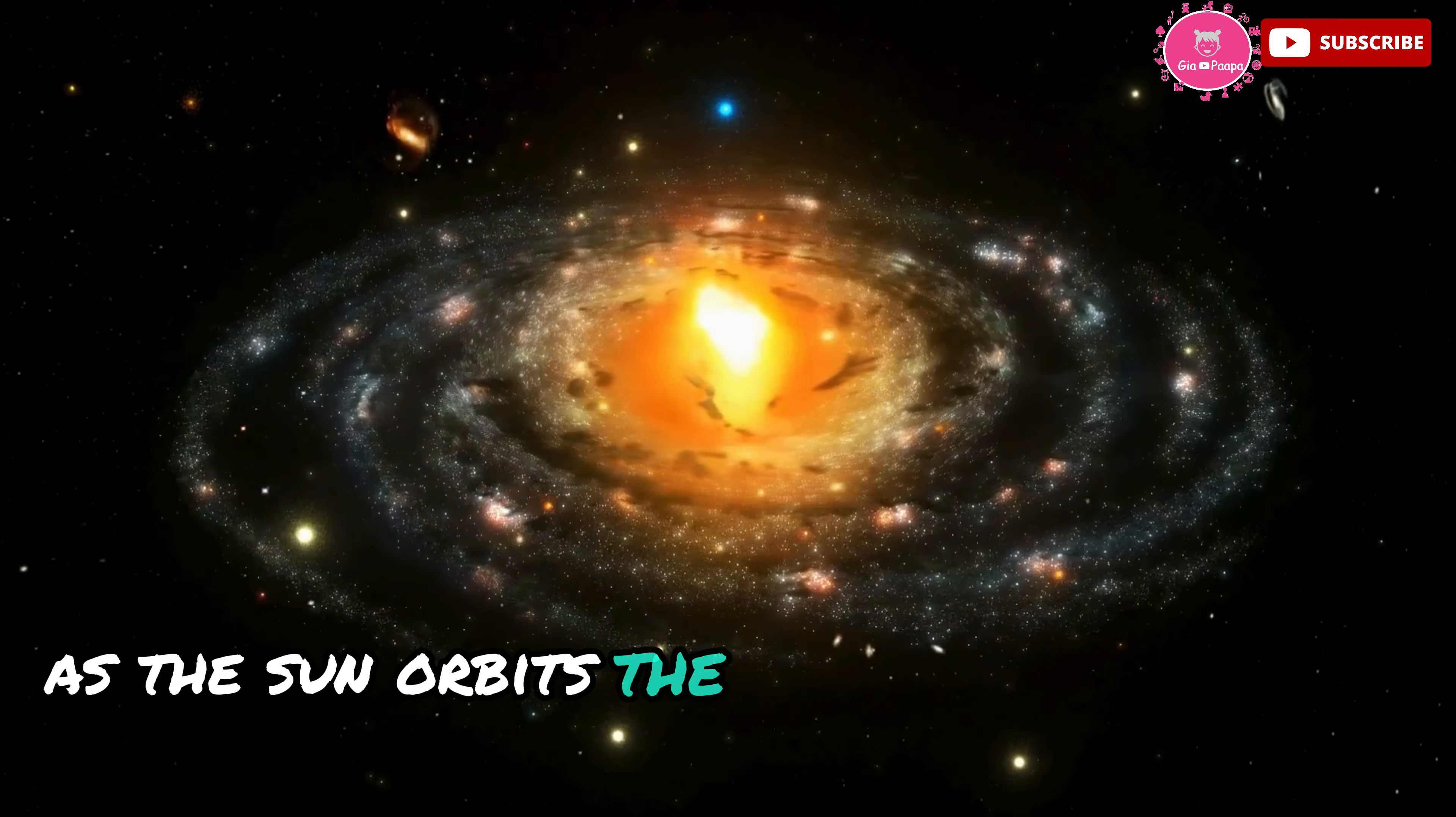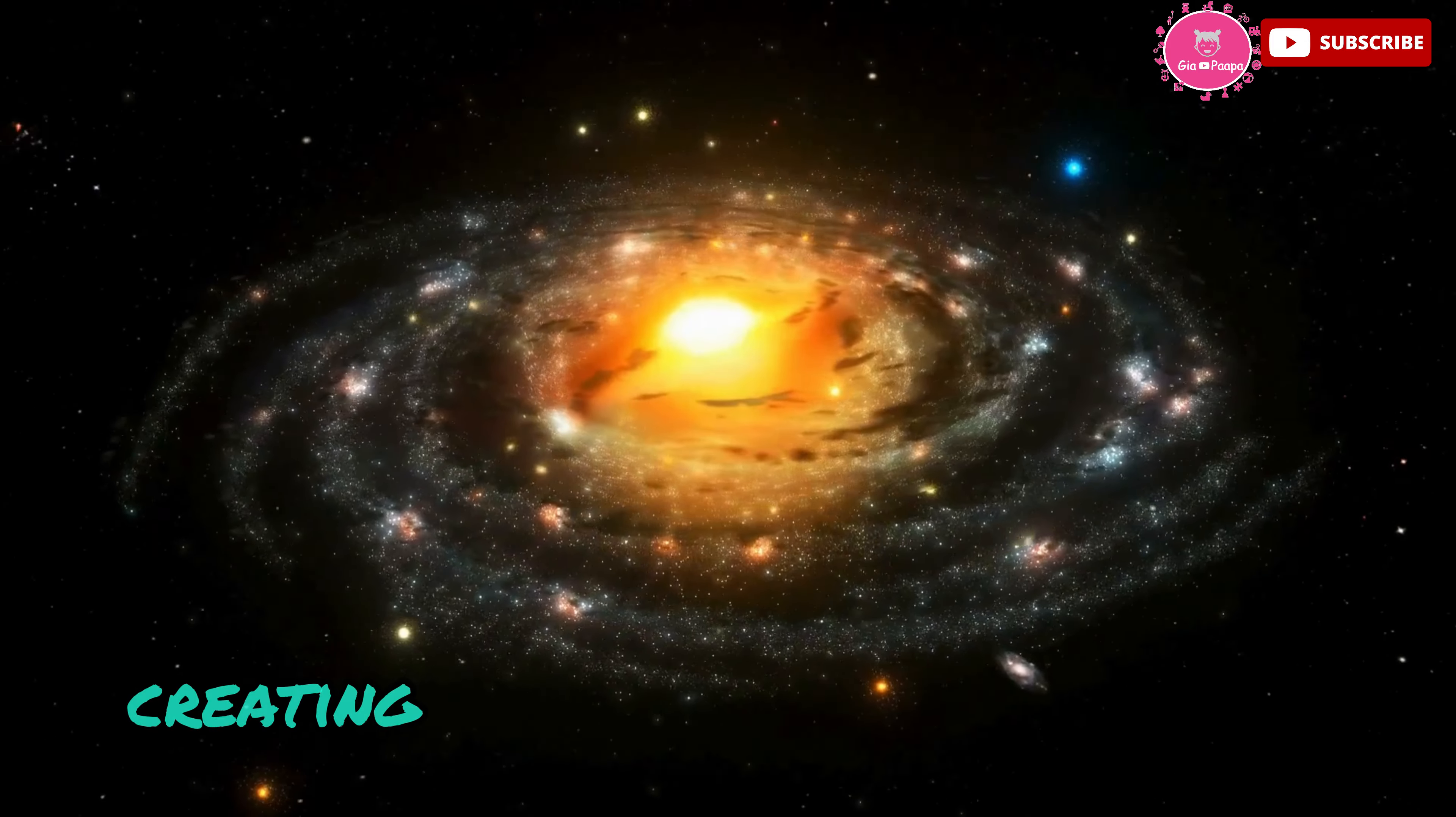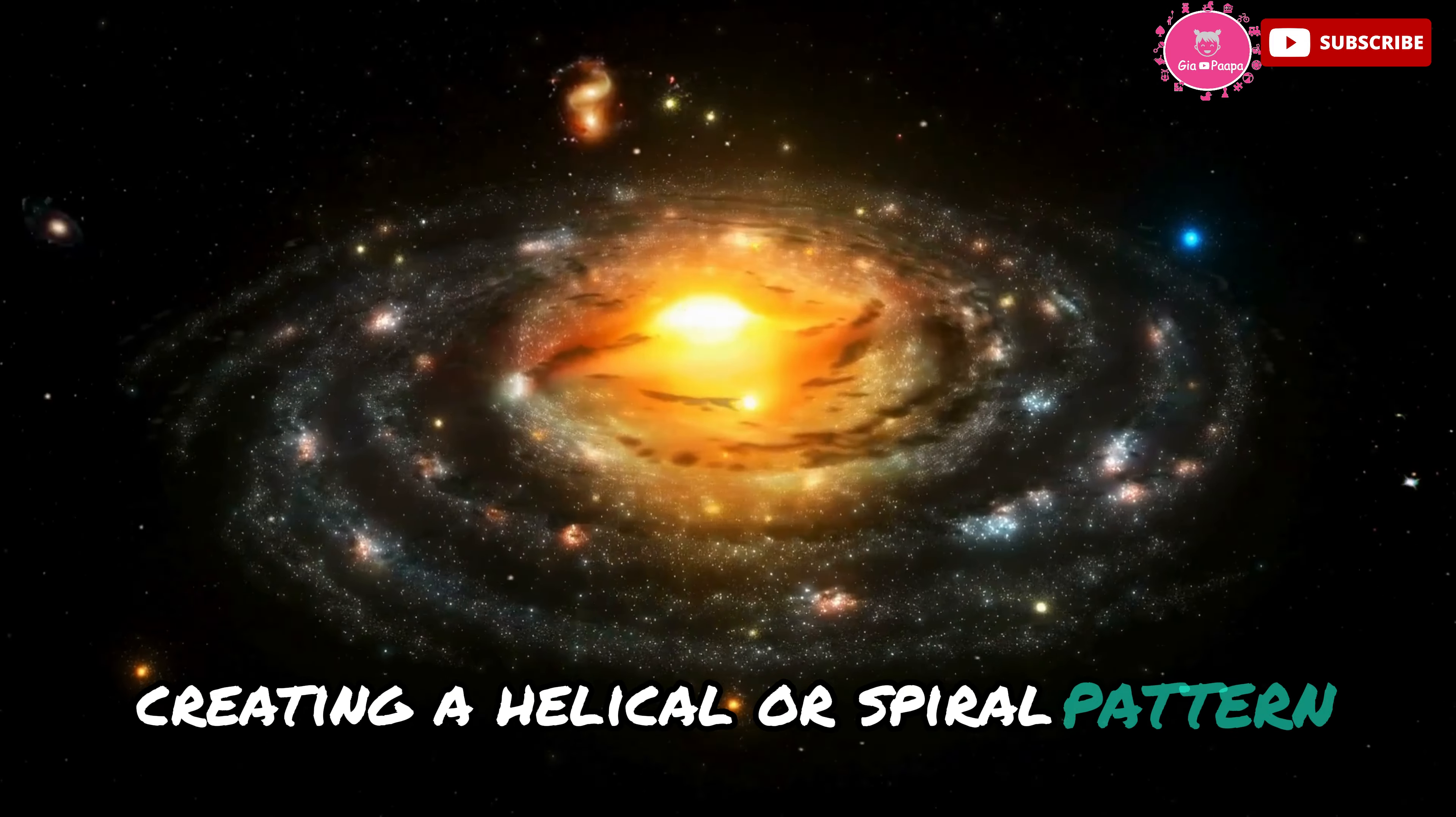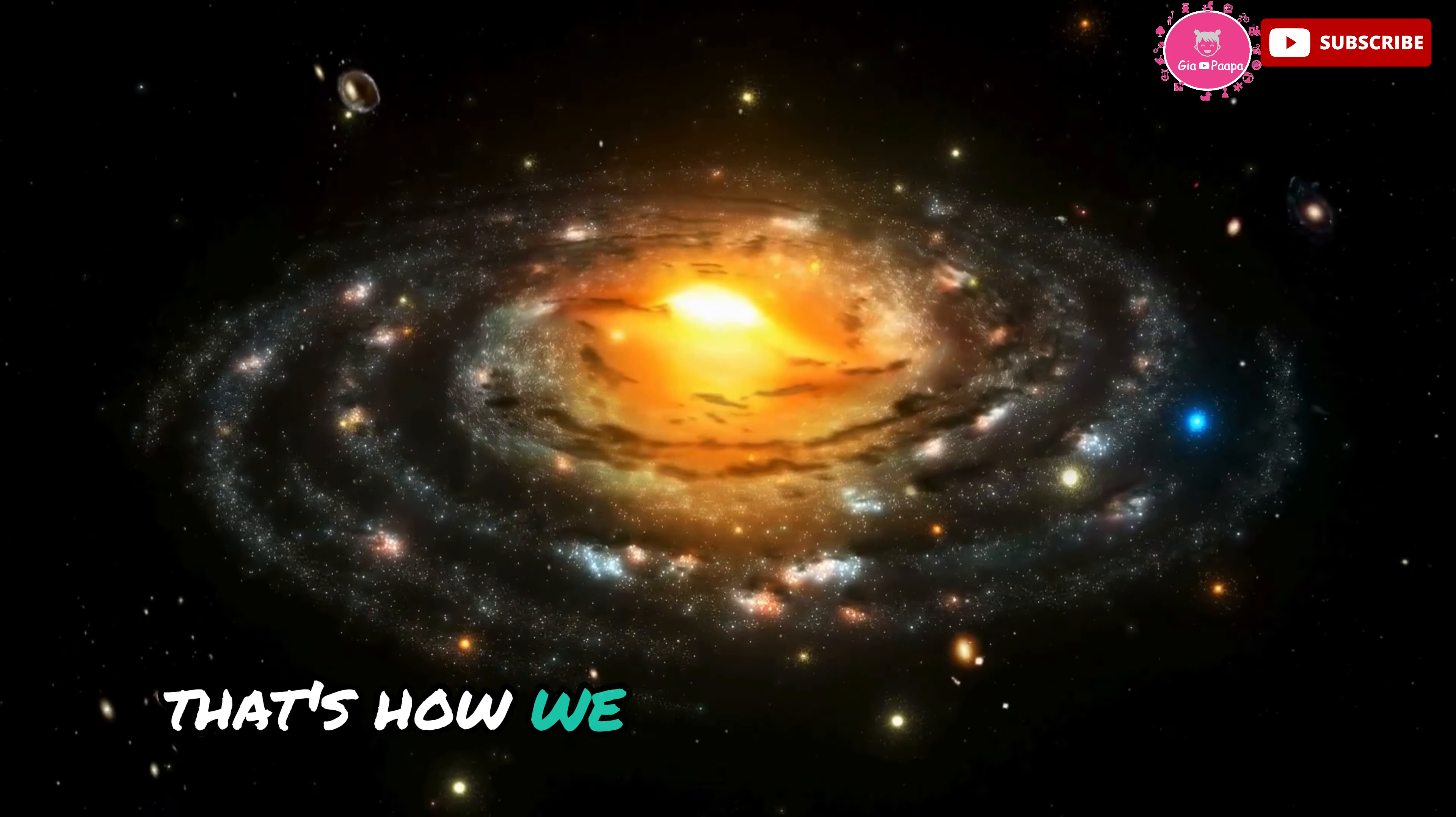As the sun orbits the center of the Milky Way, it drags the planets along, creating a helical or spiral pattern. Imagine a corkscrew or a twisted slinky. That's how we move through space.